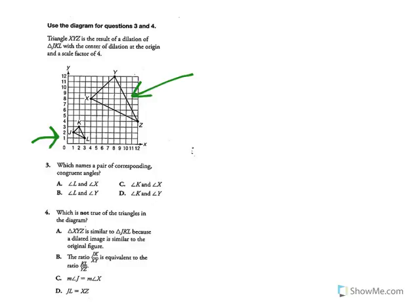Question 3 asks which names a pair of corresponding congruent angles. Looking at angle L and X — those don't match, they're not corresponding, so the answer is not A. Angle L and Y don't match either, so not B. Angle K and X don't match, not in the same position, so not C. Angle K and Y — those match, they're corresponding and in the same position, so they're congruent. The answer is D.